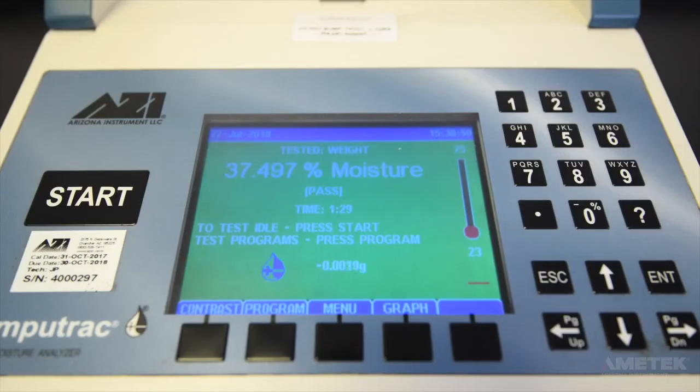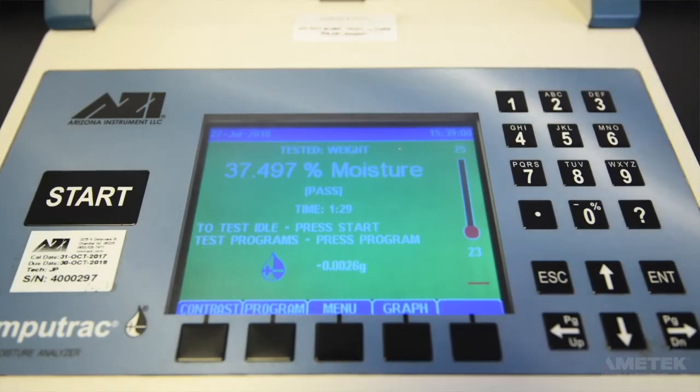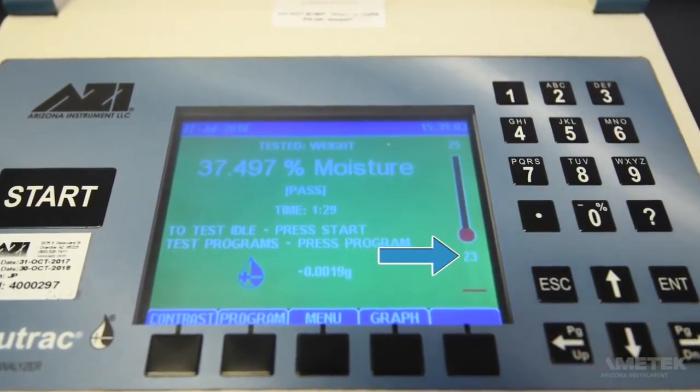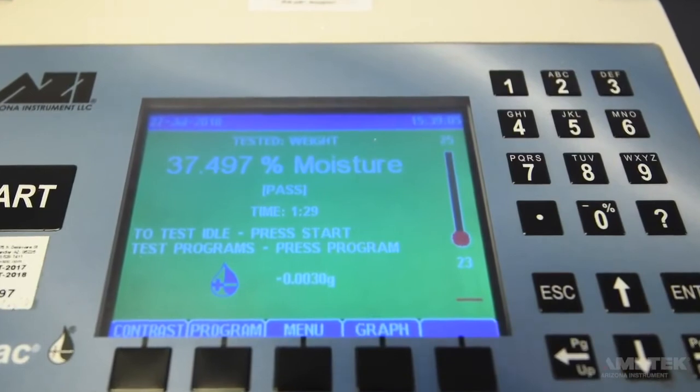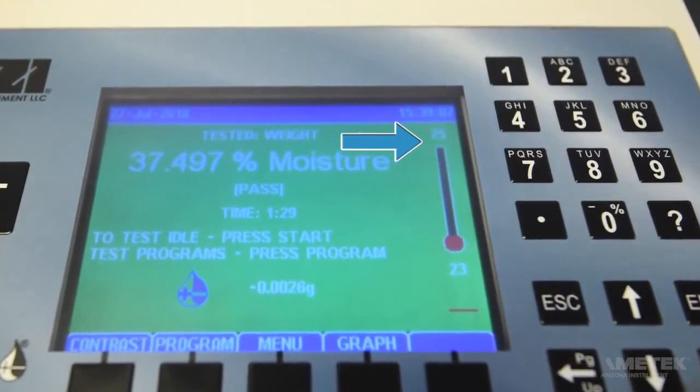On the main screen, you will see the date, time, and other information such as percent moisture, the time of the test, the next program to be tested, and a thermometer. The number at the bottom of the thermometer represents the current temperature, whereas the number at the top represents the idle temperature for the currently selected test.